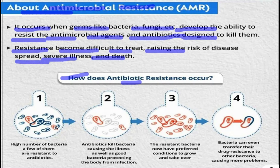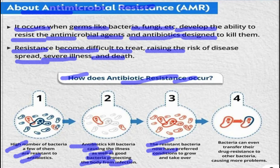How does antibiotic resistance occur? A high number of bacteria exist, and a few of them are already resistant to antibiotics. Antibiotics kill the bacteria causing the illness as well as the good bacteria protecting the body from infection. The resistant bacteria now have preferred conditions to grow and take over. The bacteria can even transfer their drug resistance to other bacteria, causing more problems.